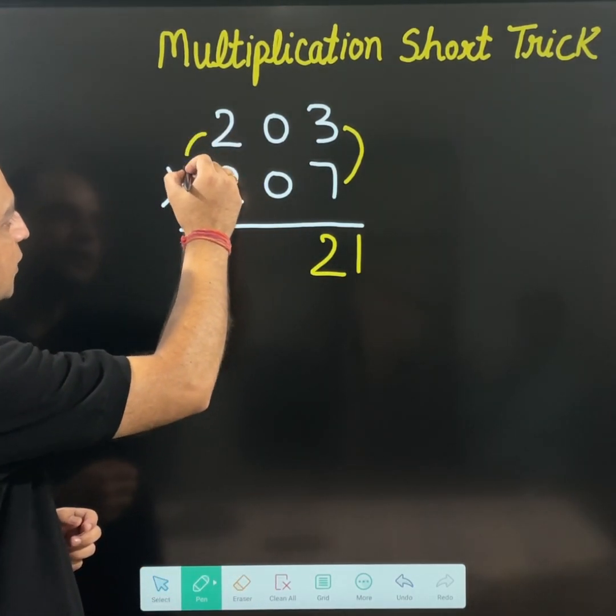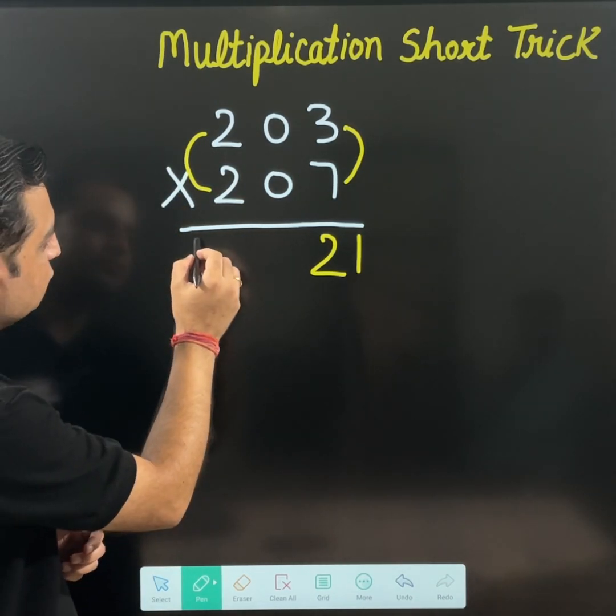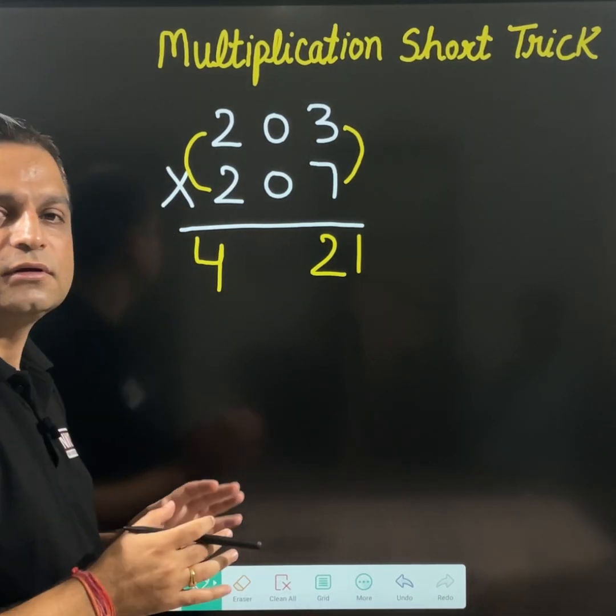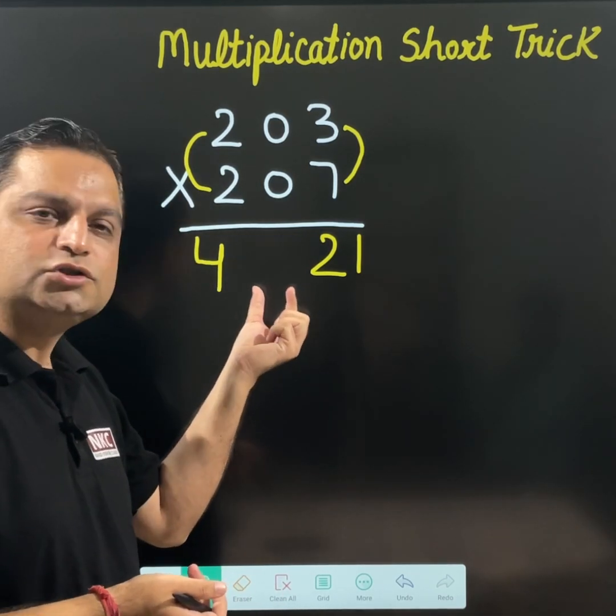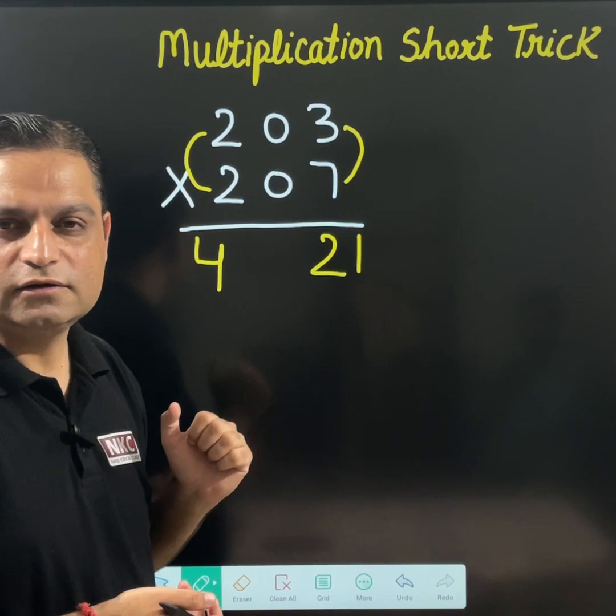Left side I am having two numbers, 2 multiplied by 2. This is 4. I have written it on the left side. Now the middle portion is left blank. Let us see what we need to write here.